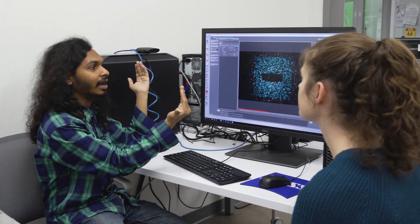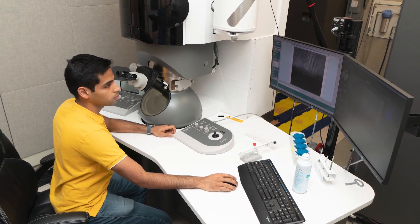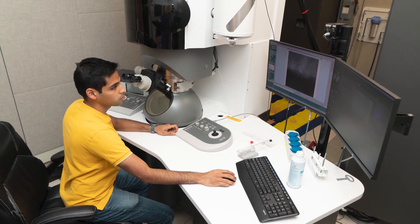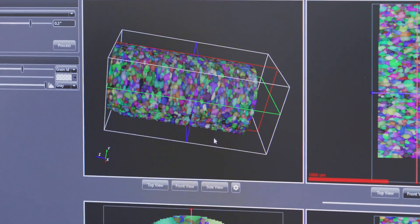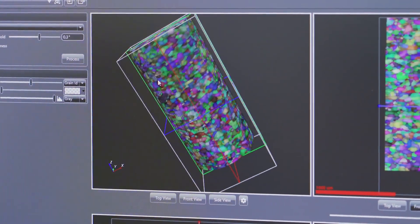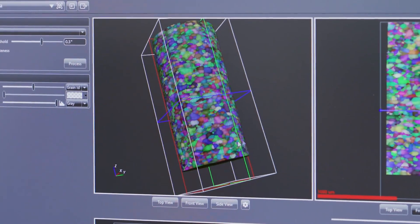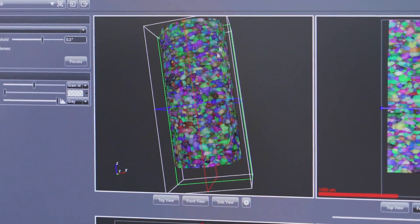My research group use really advanced characterization tools to make these material insights. We use transmission electron microscopy to actually view atoms and see how they move. We also use 3D x-ray diffraction microscopy. This is a really new technique that allows us to get 3D information, but it's non-destructive. So we can actually watch things evolve over time. So we can see how processing is changing our materials.